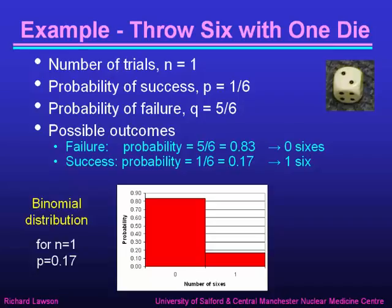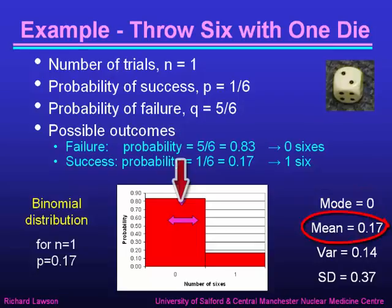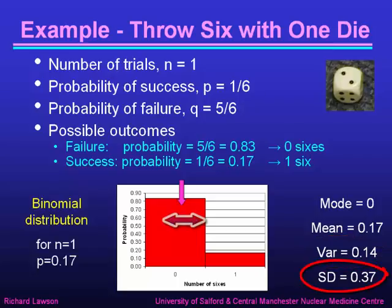Looking at the distribution, we can characterise it by several parameters. The mode — the value that occurs most frequently — is zero: the most likely outcome is that we don't get any sixes at all. The mean number of sixes is one sixth, or 0.17. The variance turns out to be 0.14, which means the standard deviation is 0.37. So this is the binomial distribution for n equals one, characterised by these parameters.